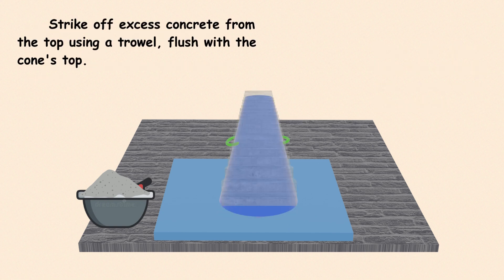Step 3. After the top layer is filled and tamped, strike off the excess concrete with a trowel, so it's level with the top of the cone.